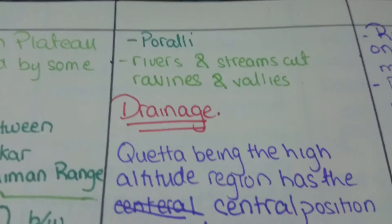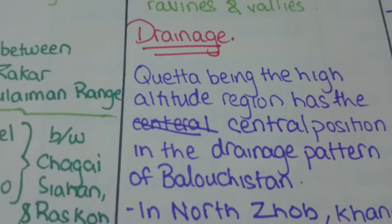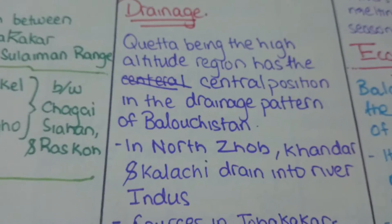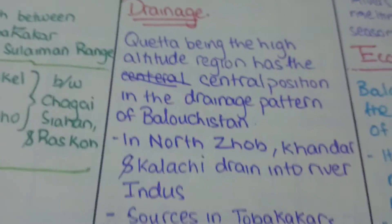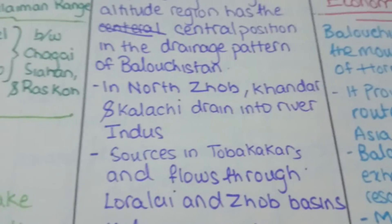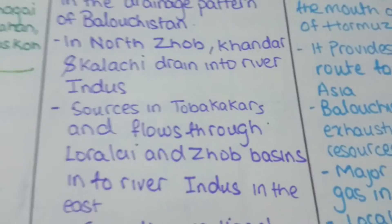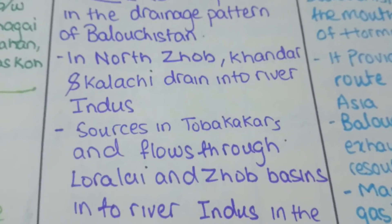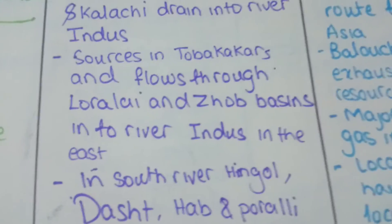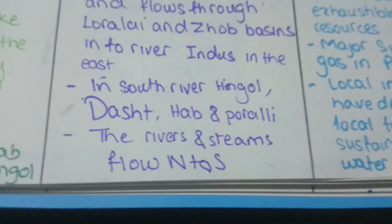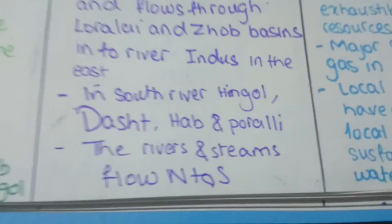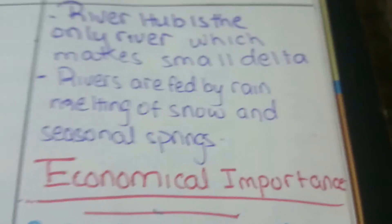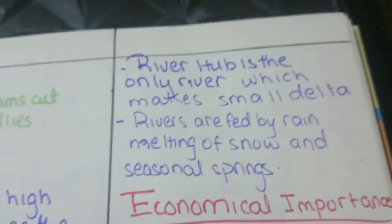Rivers and streams cut ravines and valleys in the mountains. Quetta is the region of high altitude in the Balochistan Plateau and holds a central position in the drainage pattern. Rivers Zhob, Khandar, and Kalachi drain into the Indus. Sources of Toba Kakar flow through Loralai and Zhob Basin into the Indus in the east. In the south, rivers Hingol, Dasht, Hab, and Porali are present, flowing north to south, except some which flow west to south into the river Hingol.